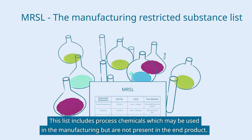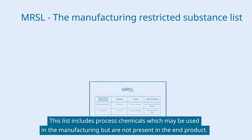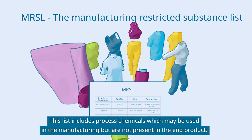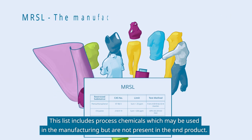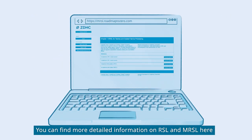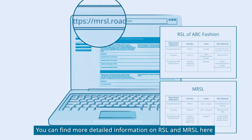This list includes process chemicals which may be used in the manufacturing but are not present in the end product. You can find more detailed information on RSL and MRSL here.